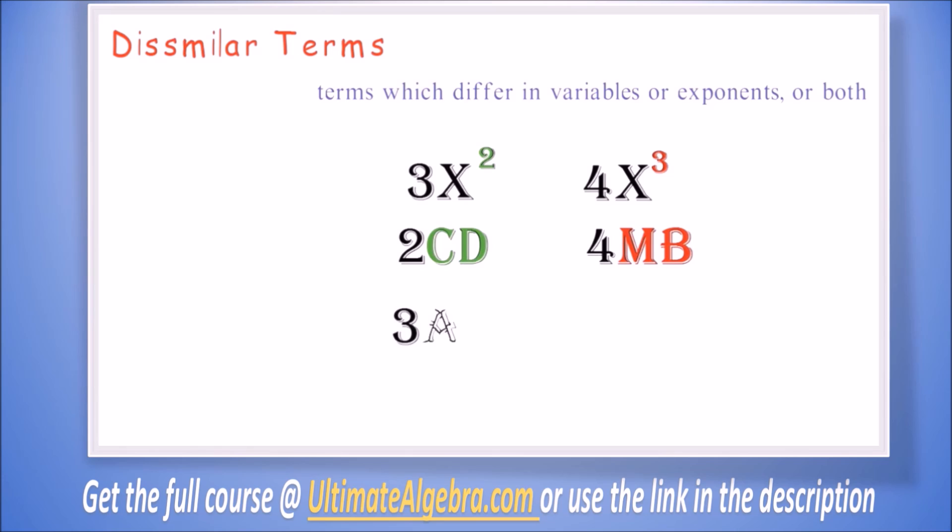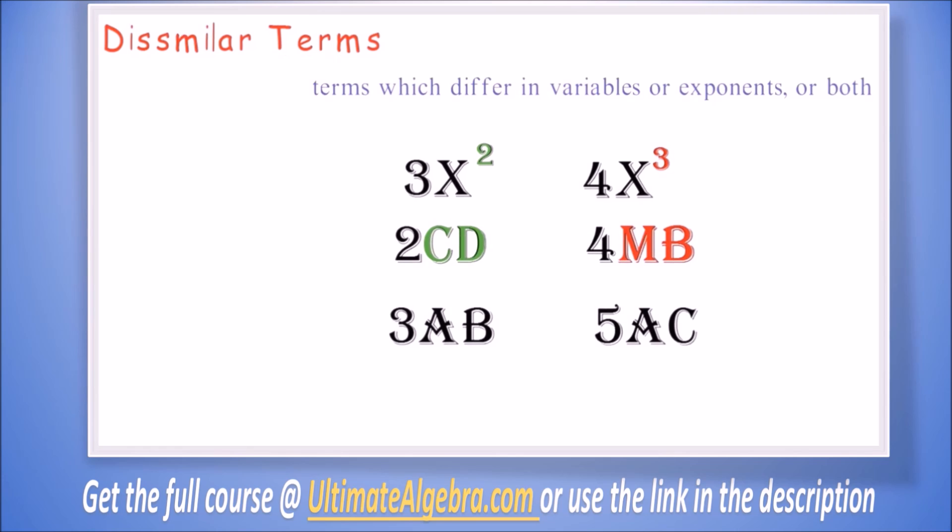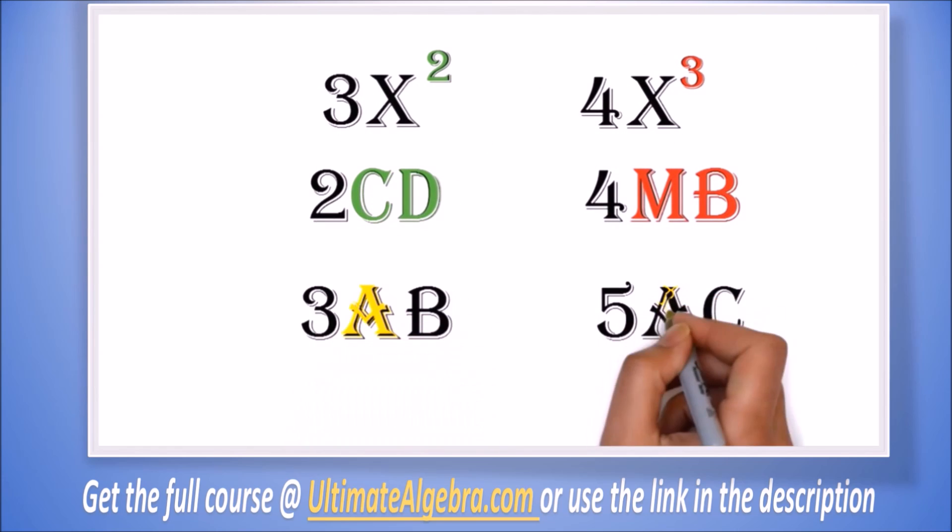One more example: 3ab and 5ac. Now here we see that they both have the variable a, but one is ab and the other is ac. They are still dissimilar terms. All the letters must be exactly the same.